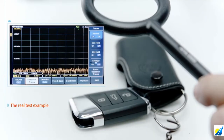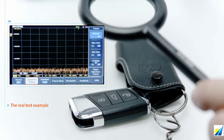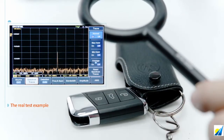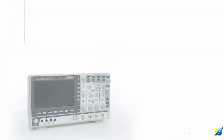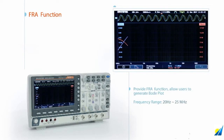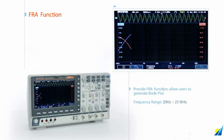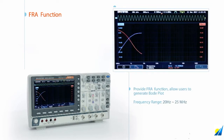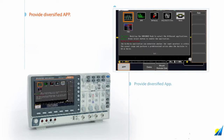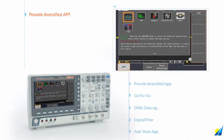This is a remote control test. The MDO-2000E can obtain the correct frequency of a variety of remote controls. The MDO-2000E also provides FRA function with a frequency range from 20 Hz to 25 MHz, allowing users to generate Bode plots and providing diversified applications.